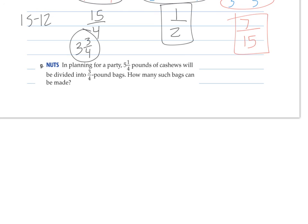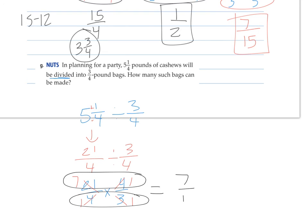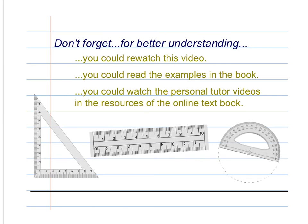Last one, see if you can solve the word problem now. In planning for a party, five and one fourth pounds of cashews will be divided into three fourths pounds of bags. How many such bags can be made? It says it right there, divided. So five and one fourths divided by three fourths. First make them into fraction form. That's twenty one over four divided by three fourths, which is keep the first number and multiply by the reciprocal. Cross cancel. Three goes into three once. Three goes into twenty one seven times. Seven times one is seven. One times one is one. Answer is seven bags can be made.